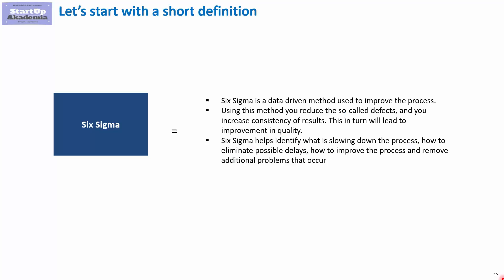Six Sigma is a data-driven method used to improve a process. In this method, we not only look at data to analyze the process and find the root cause behind problems, but we also define what we call defects — things which don't give us the desired result — and we want to reduce them. By decreasing defects, you improve the quality of the process, the product delivered, and the service, thereby increasing customer satisfaction.